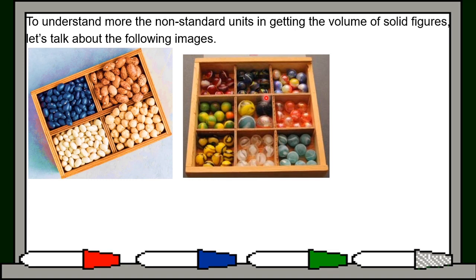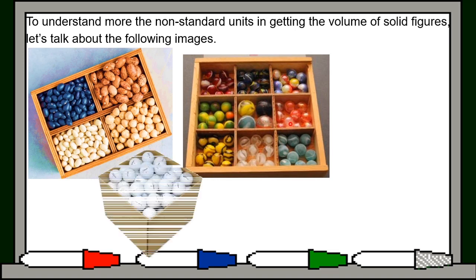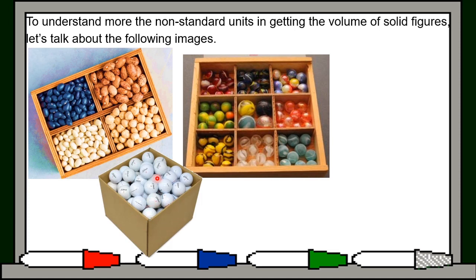The next box is equally divided into 9 small boxes, at ang gamit natin dito ay mga holen. Kung papansinin mo, kapagka malaki yung holen, mas konti yung bilang ng holen para mapuno mo yung isang box. While kapagka maliliit na holen yung gamit mo, mas maraming holen yung kakailanganin mo para mapuno yung isang box. Ganun din — kapagka maliit, madaming holen, so mas mataas yung volume. Kapagka malaki, mas mababa yung volume.